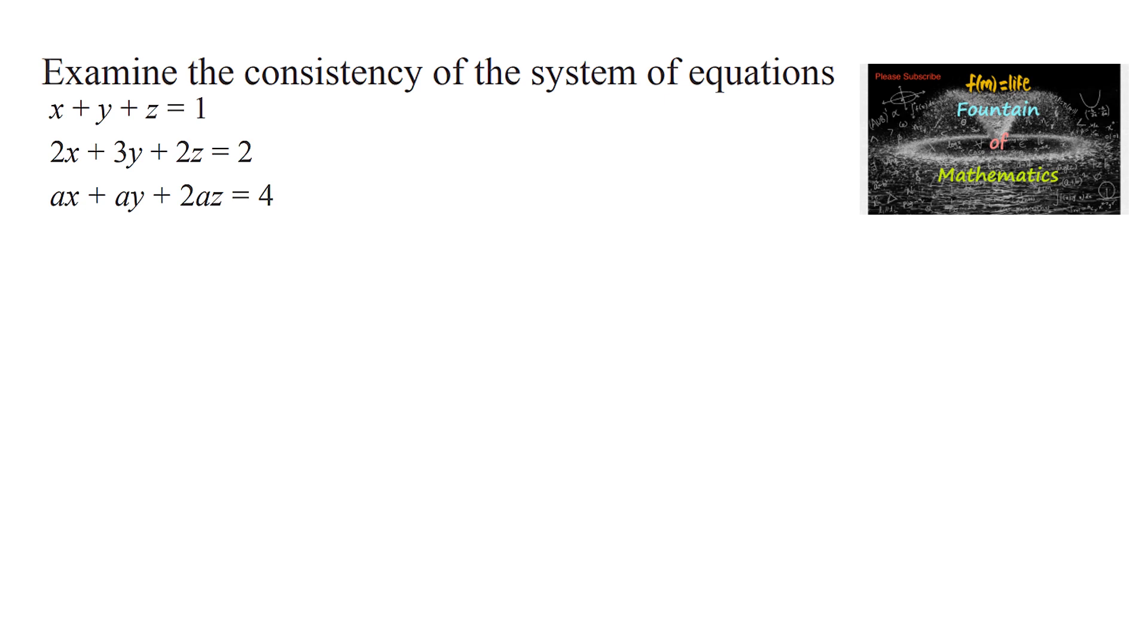Examine the consistency of the system of equations: x + y + z = 1, 2x + 3y + 2z = 2, ax + ay + 2az = 4. Here a is some constant and x, y, z are the variables.